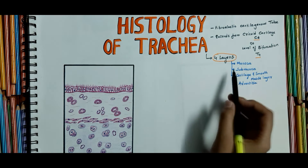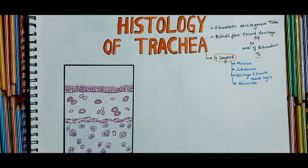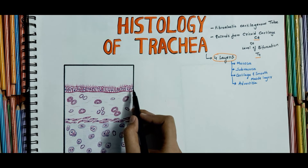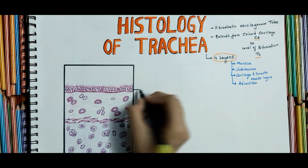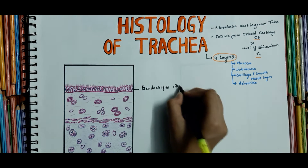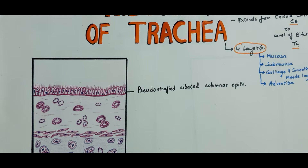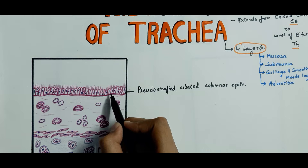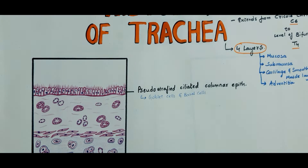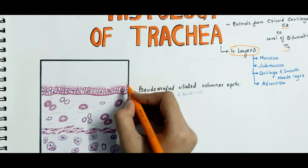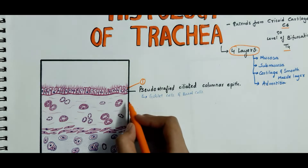Now coming to the in-depth explanation of the first layer — the mucosa. The lumen of the trachea is lined by mucous membrane, and that consists of a lining epithelium — the pseudostratified ciliated columnar epithelium. You can notice the goblet cells; it contains numerous goblet cells and basal cells that lie next to the basement membrane.